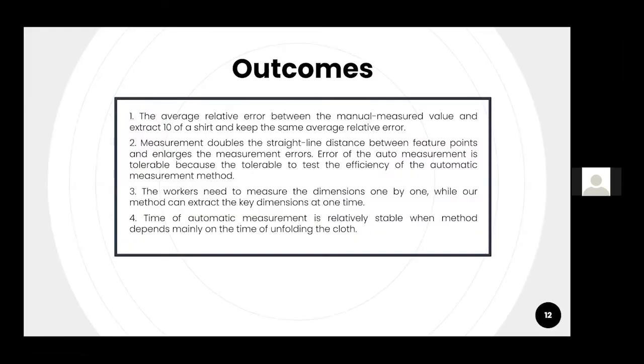Coming to the outcomes. Based on the proposed method, we developed a prototype system and carried a series of experiments to justify the accuracy and the efficiency of our method. We used several garments to test the measurement of each type and the average relative error between the manually measured value and the auto measured value. The results were quite promising with less than 8% error chance.